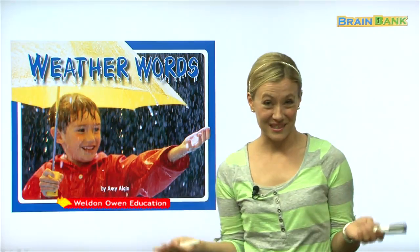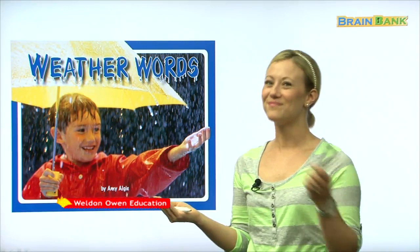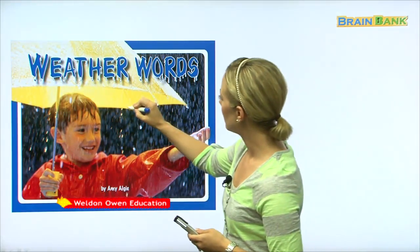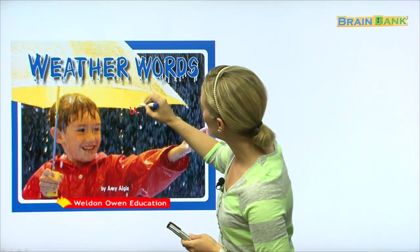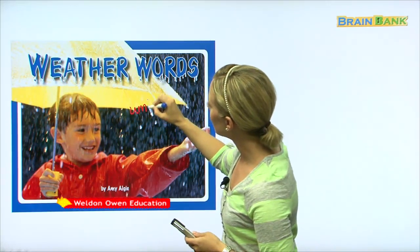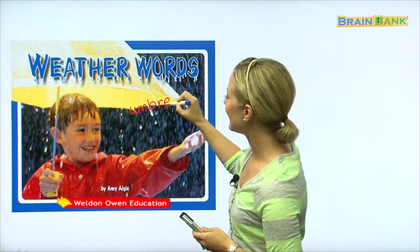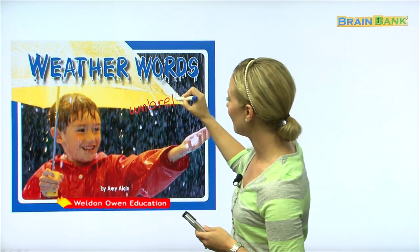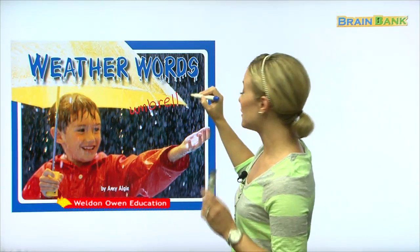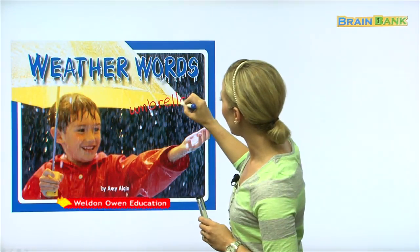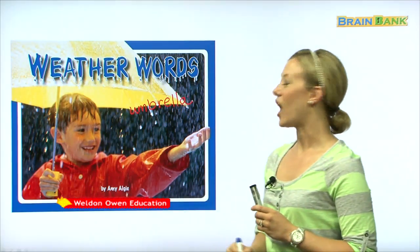Does anyone know how we spell that word? Let's try it. U, M, B, R, E, L, L. There's two L's. And A, umbrella.